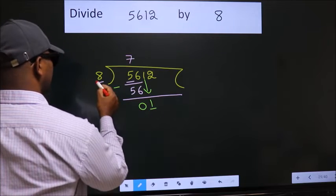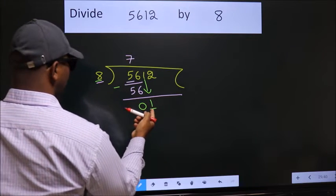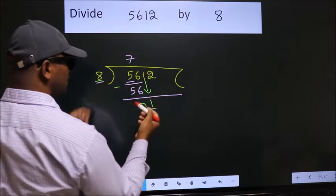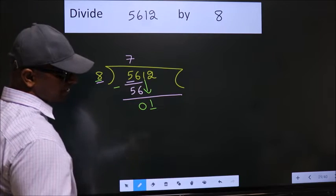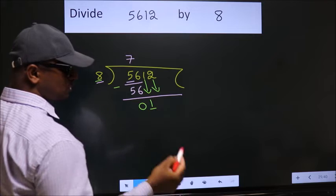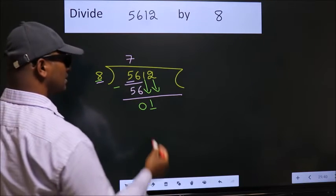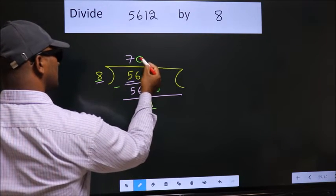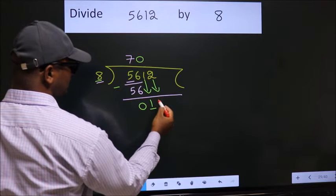Here we have 1. Here 8. 1 is smaller than 8. So we should bring down the second number. And the rule to bring down second number is put 0 here. Then only we can bring down this number.